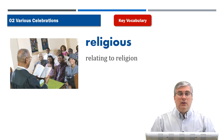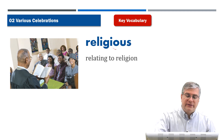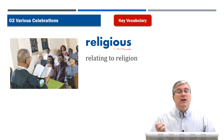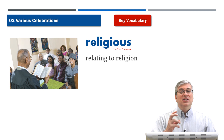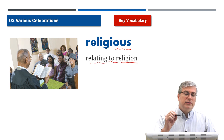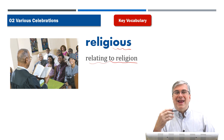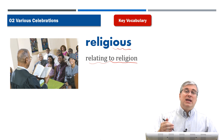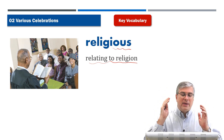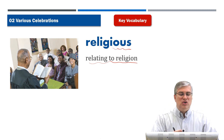Next, we have the word religious. The suffix -ous means full of. For example, famous means full of fame. Religious means full of religion — relating to religion. Somebody who is religious has a religion; they believe in a god or gods. They have religion. They are religious.